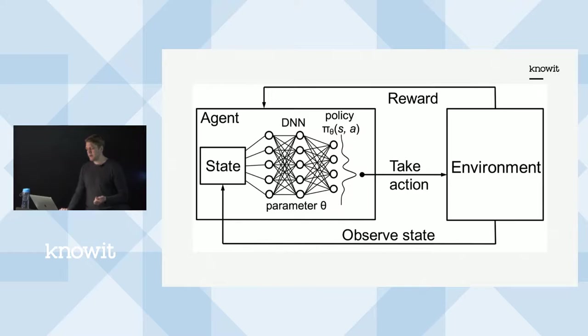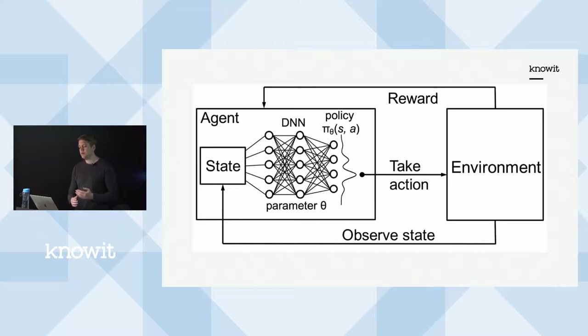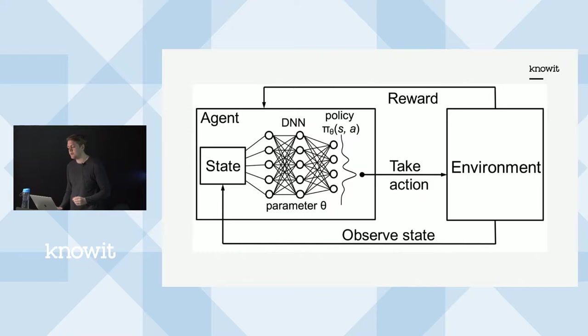With Deep Q-Learning, the environment returns the state and a reward, you plug it into a neural network, and that neural network tells you which action to choose. You take that action and feed it back into the environment. When you introduce a neural network, you have to make a couple of changes: the input must be only numbers, so you have to map the state to a numerical vector. You should also introduce experience replay, which we'll discuss shortly.